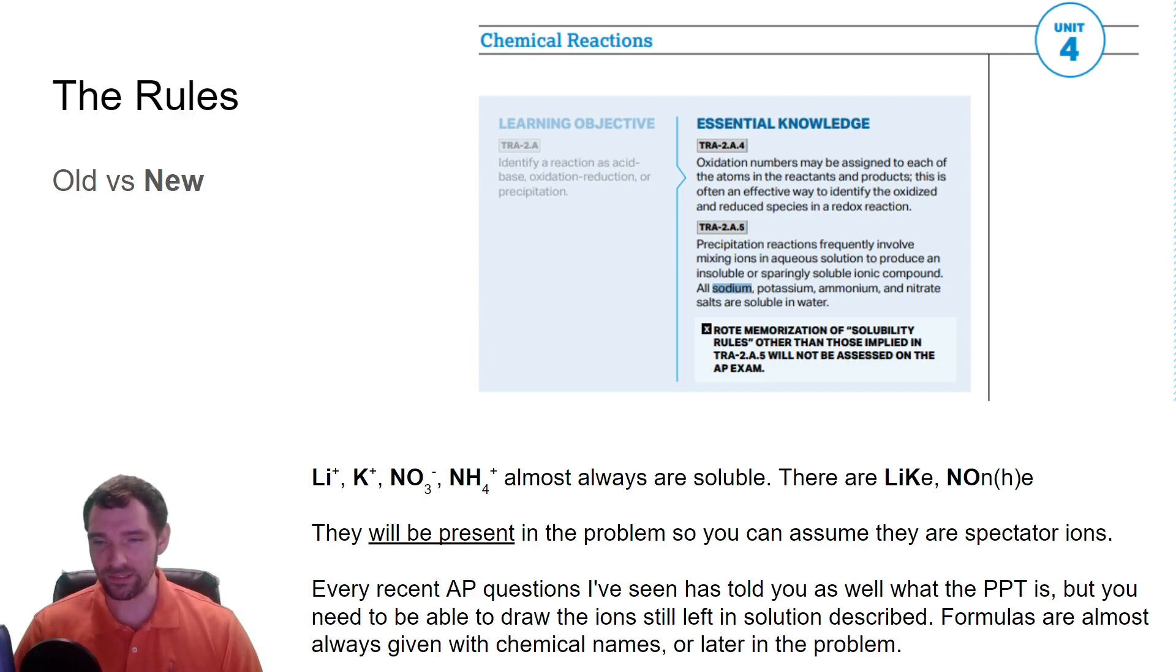They almost always tell you which one is actually precipitating in the problem. So you don't have to figure out what's precipitating. That's not really the case, at least with the free response questions. They tend to have you using precipitation as a concept to do some sort of modeling.